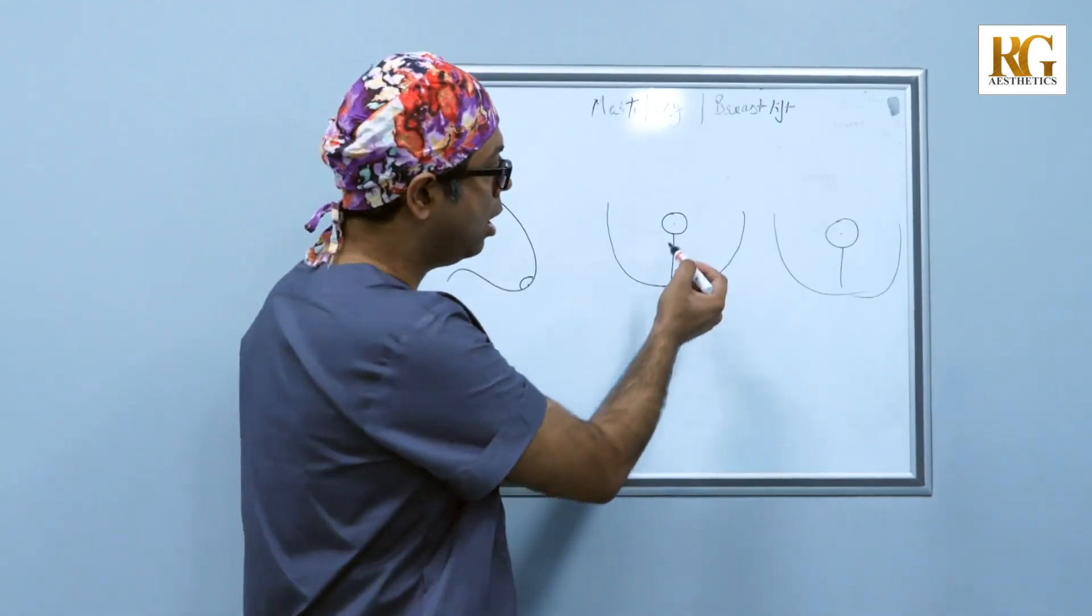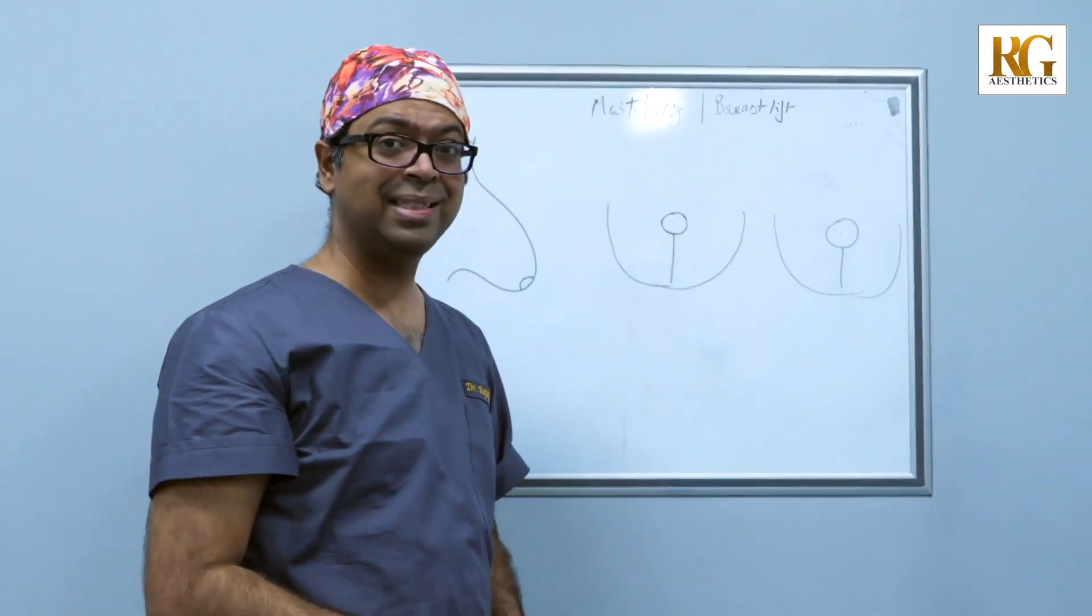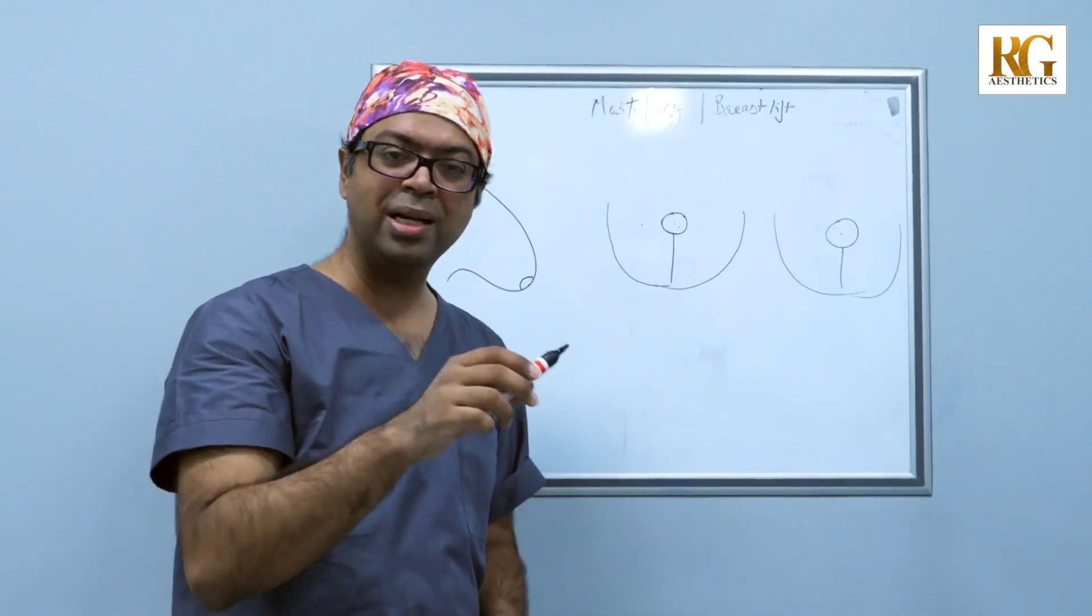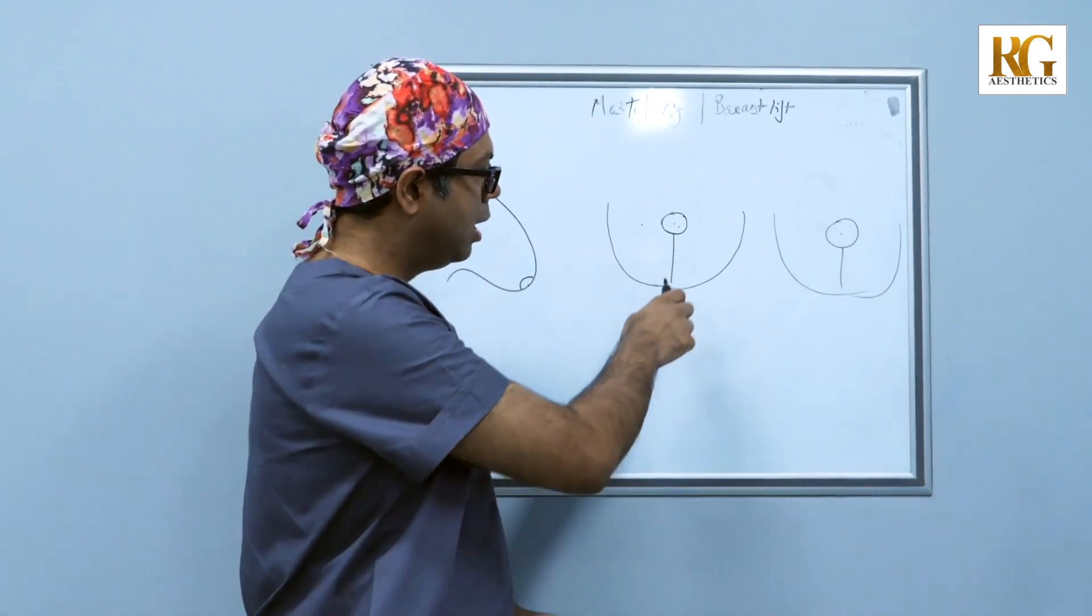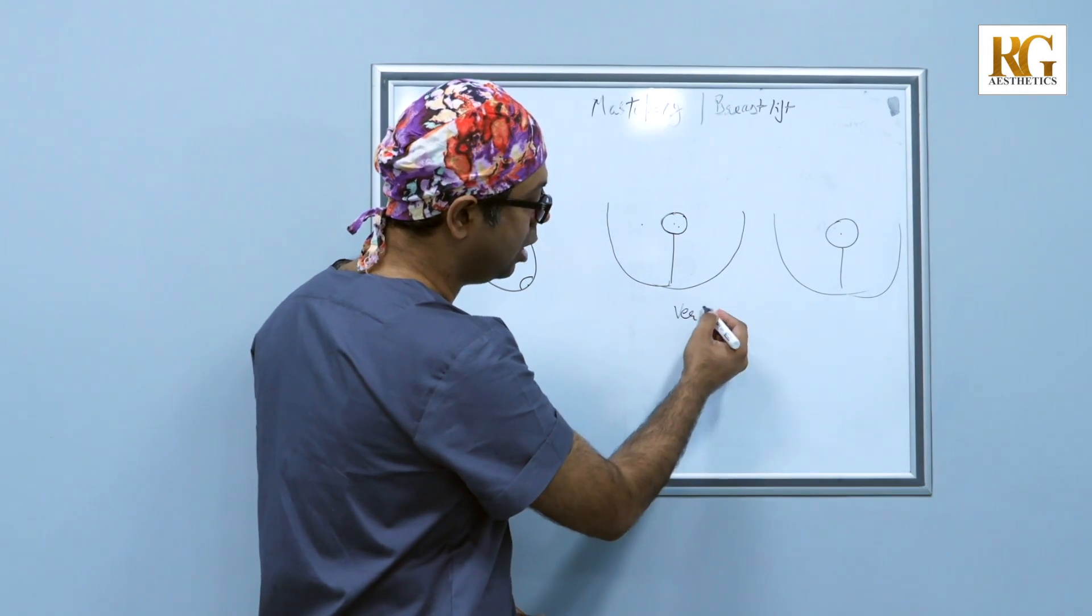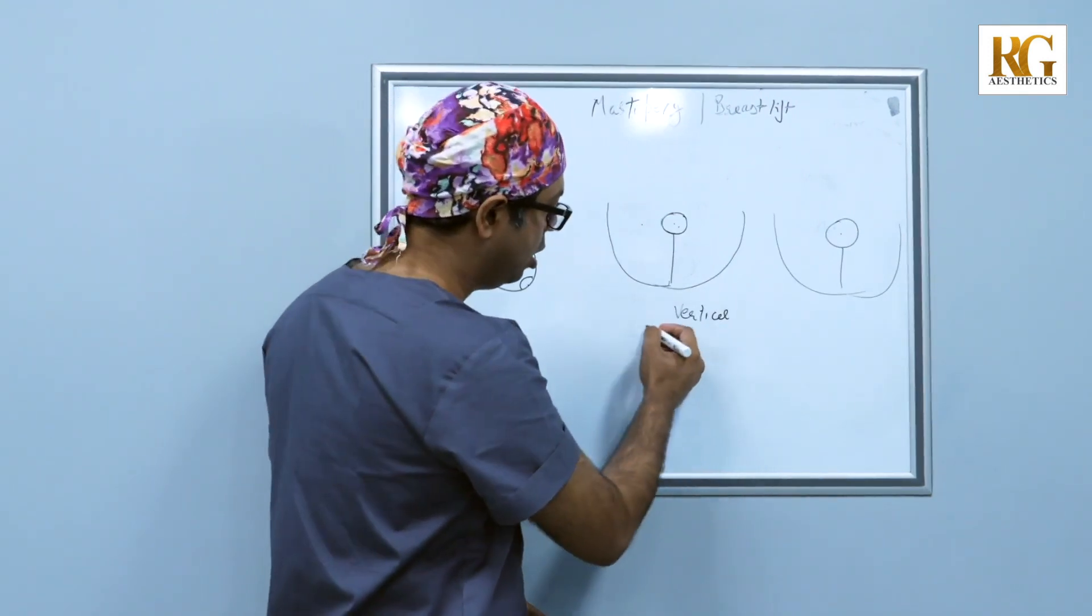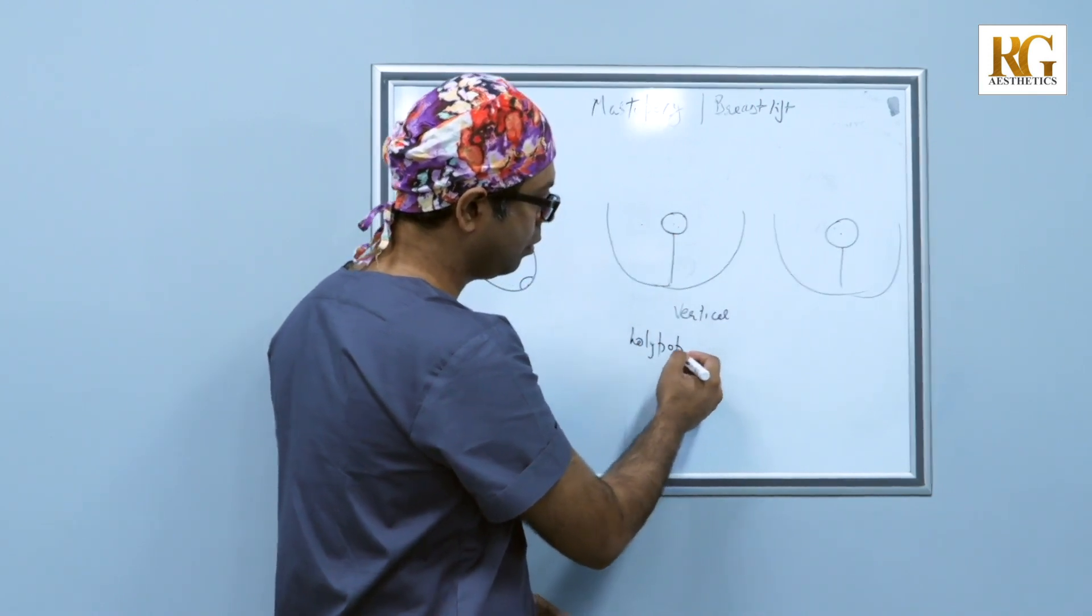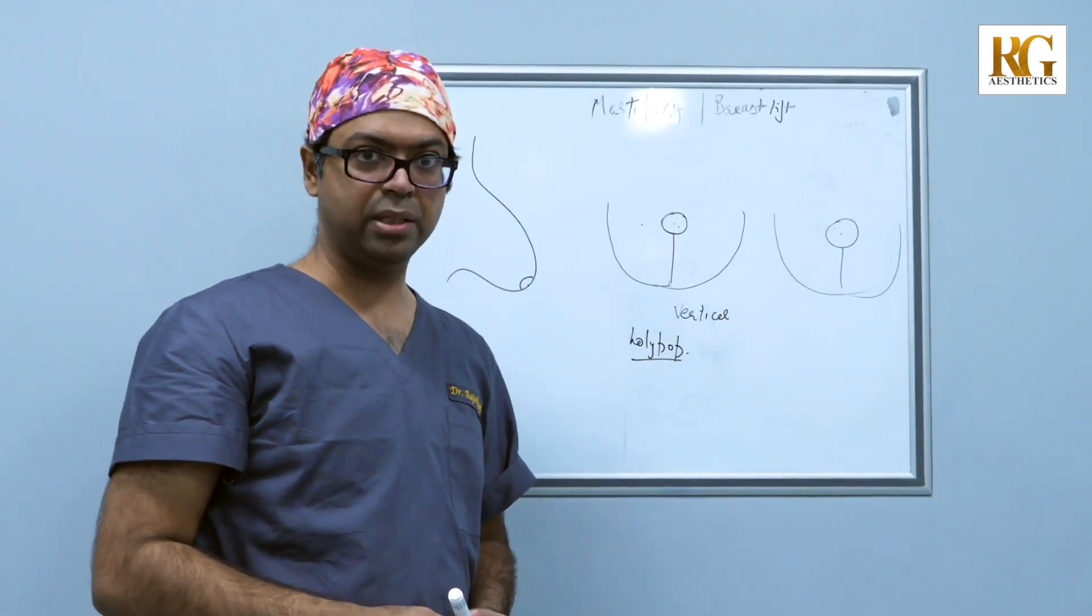These scars around the areola are not much visible because it is at the junction of a dark skin and a light skin. Then I give a short vertical scar. This is a vertical scar or also called as a lollipop scar technique. This scar also fades nicely over the next seven to eight months.